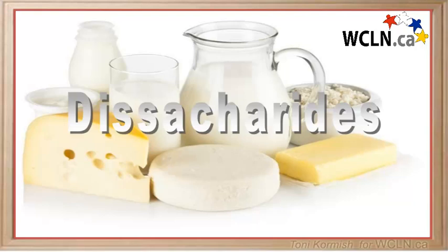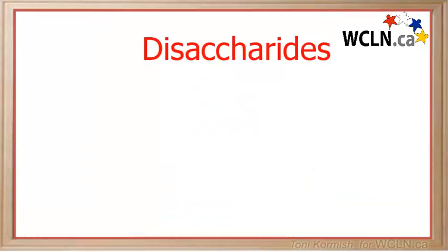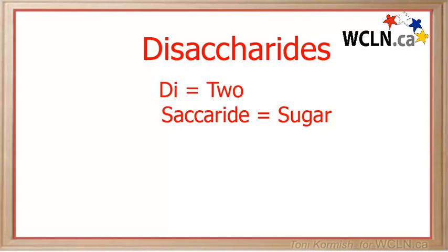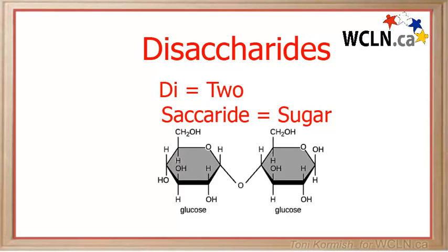The second of the three groups of carbohydrates that you will need to know are the disaccharides. Di meaning two, and saccharide meaning sugar. So two monosaccharides bonded together make a disaccharide, and this is what it looks like. We have two six-sided carbon rings bonded together.